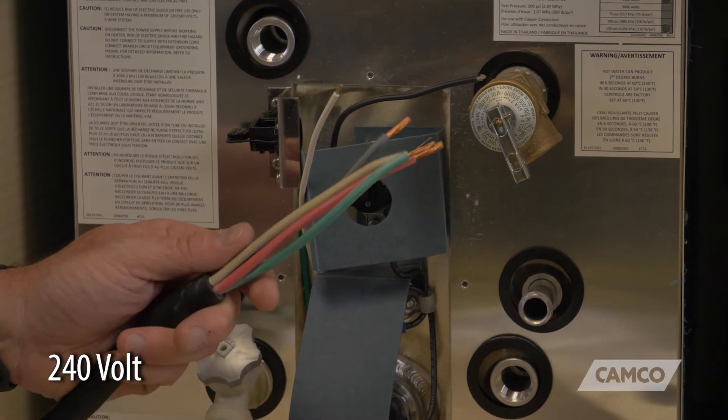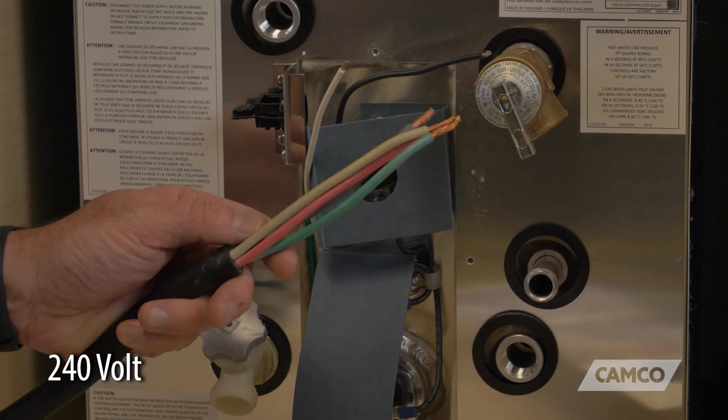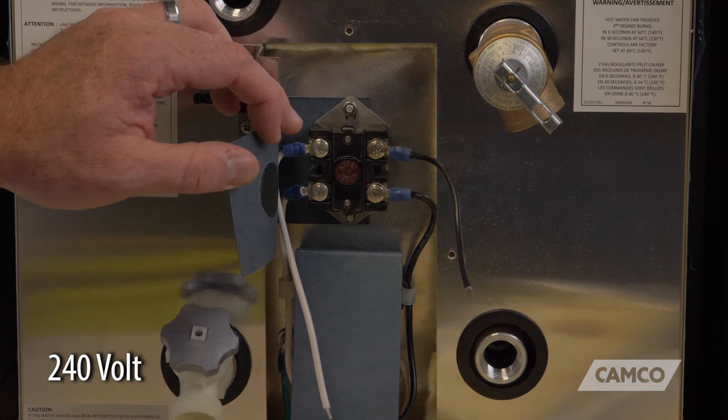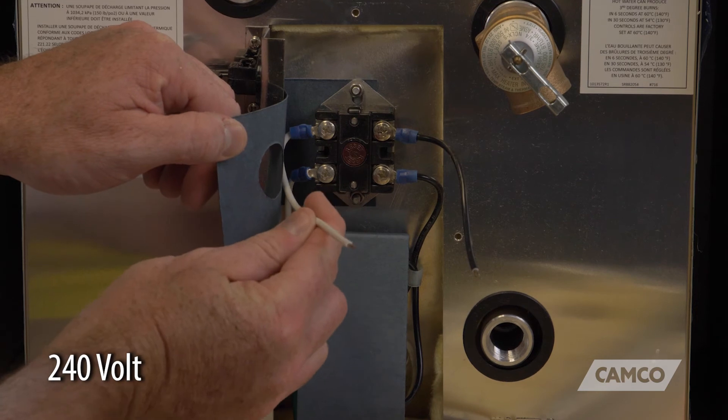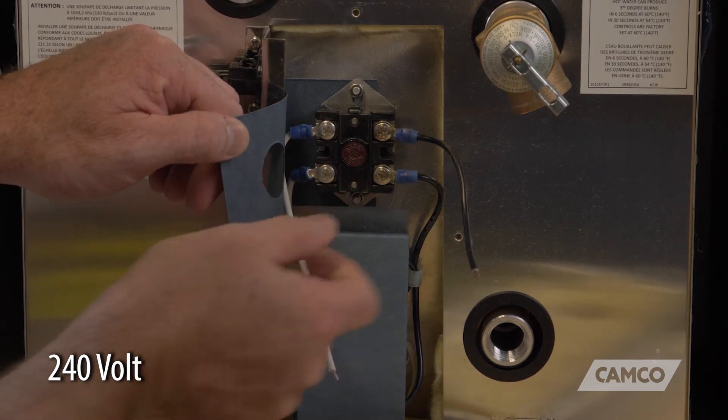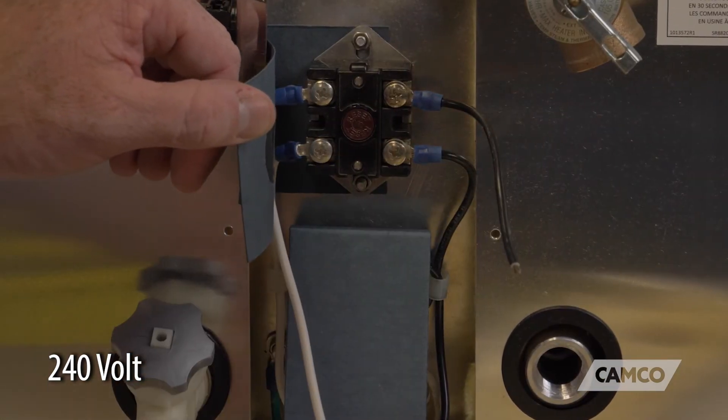With 240 volt, the process is going to be pretty much the same. This is what your 240 volt Kuma water heater is going to look like. This is your high temp limiter. We've got the loose white wire coming off the high temp limiter, and we've got the black wire coming off of the high temp limiter.